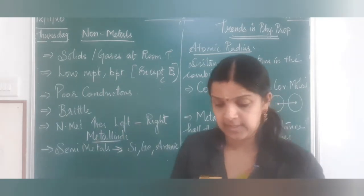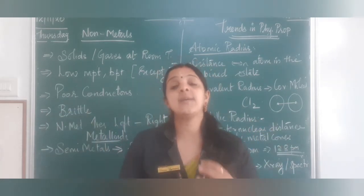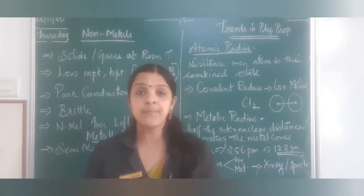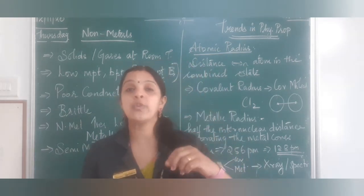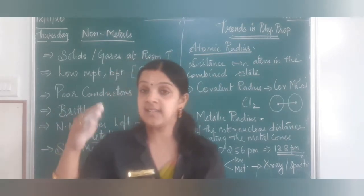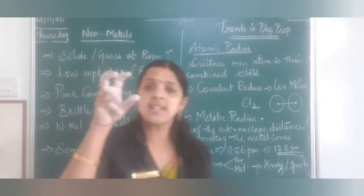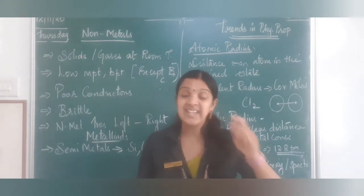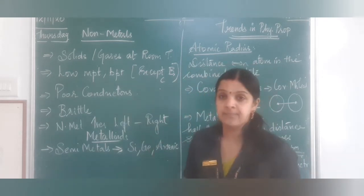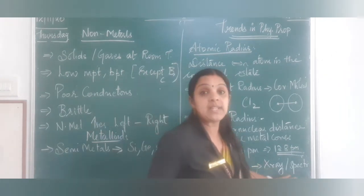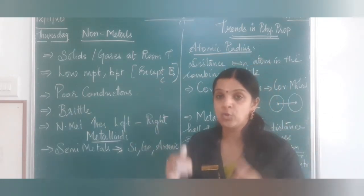Metalloids are also called semi-metals — they have partial character of both metals and non-metals. Examples include silicon, germanium, arsenic, antimony, and tellurium. With this we complete the discussion of metals, non-metals, and metalloids. Now we will study physical properties that play a major role in periodic table trends, starting with atomic radius.